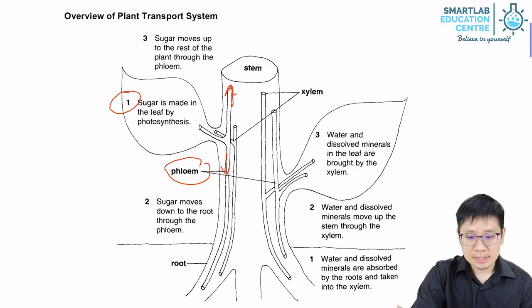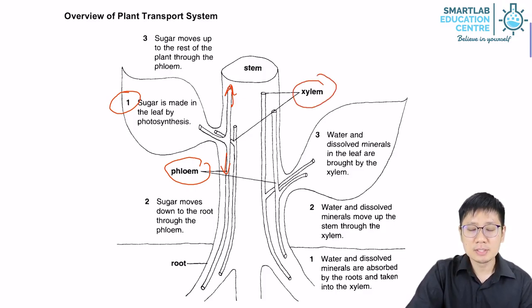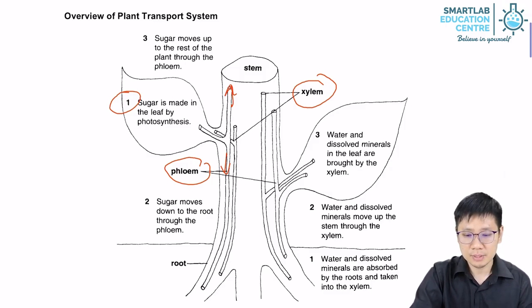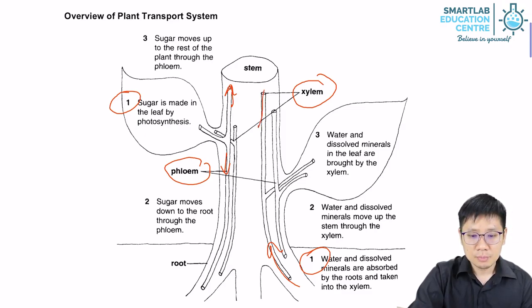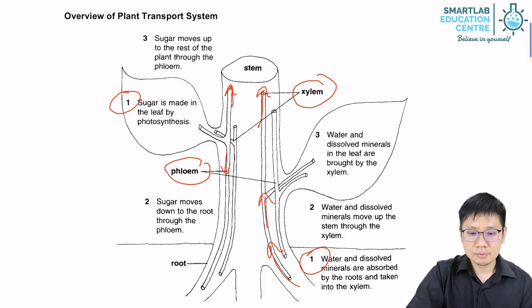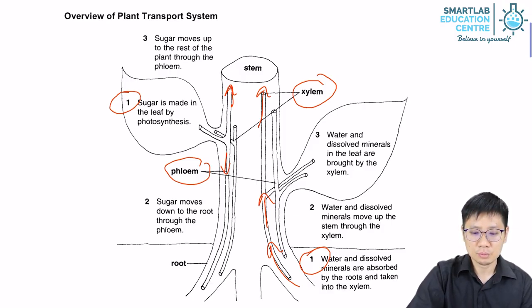On the other hand, we have the xylem. The xylem transports water and dissolved minerals, which are absorbed through the roots. The xylem uses a few different forces, but mostly it is the transpiration pull. The transport of minerals and water is in one direction only — it moves from the roots upward to the leaves.